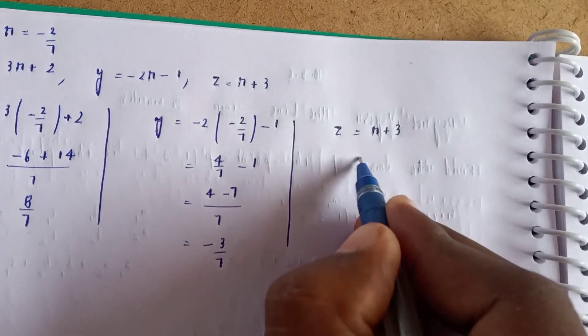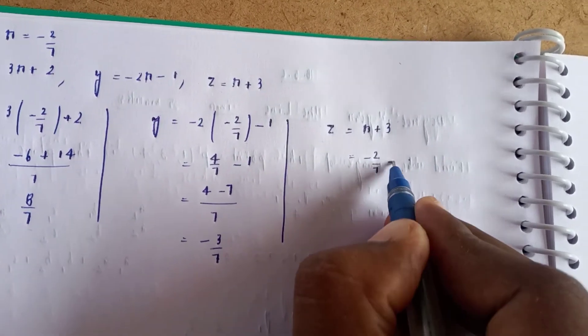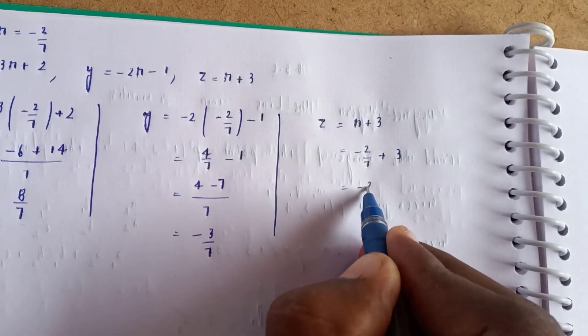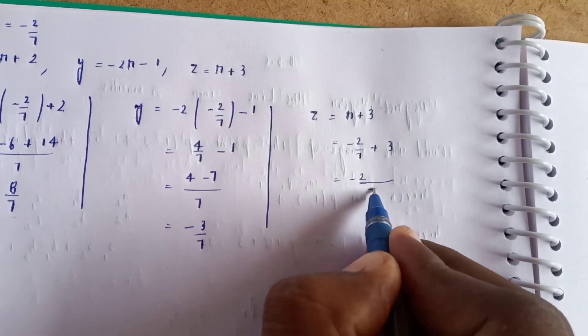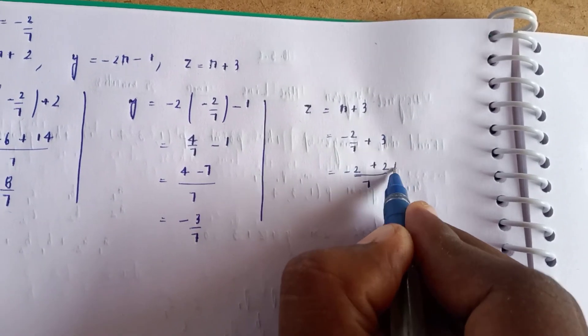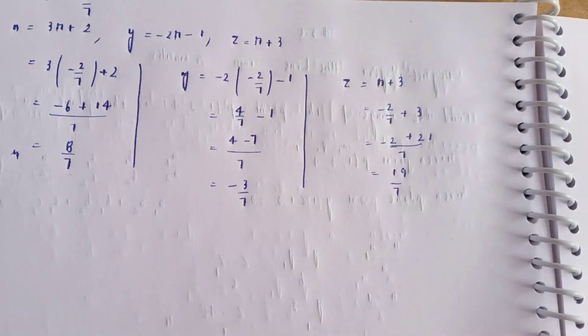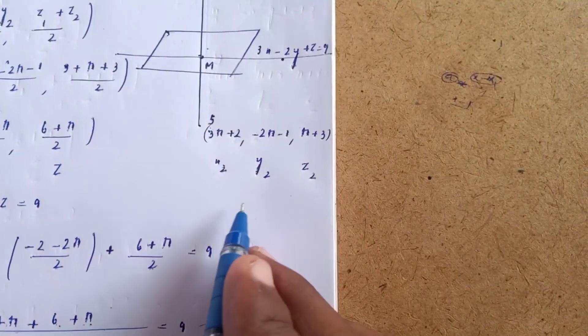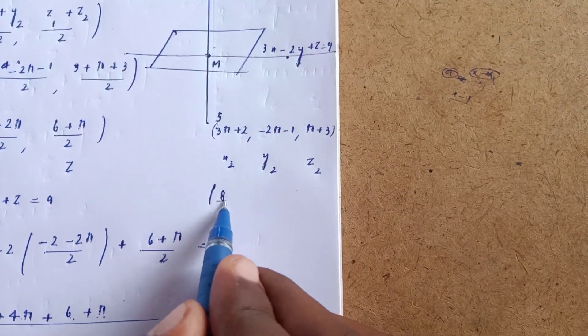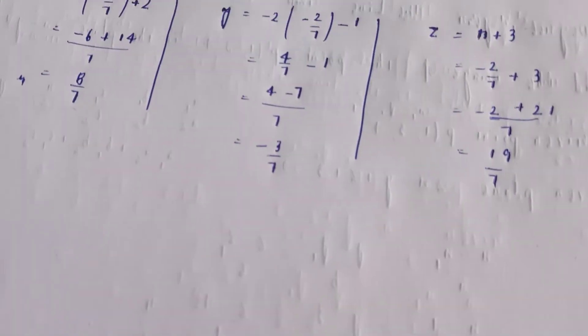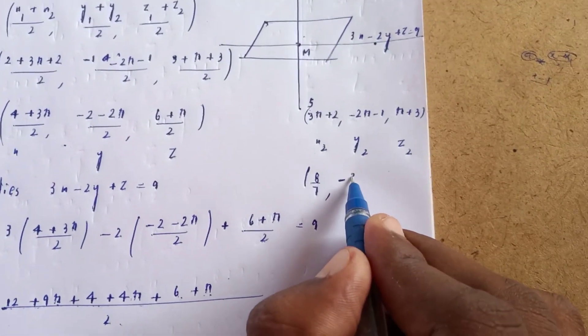For z: z = -2/7 + 3 = (-2 + 21)/7 = 19/7. Therefore, the image of the point is (8/7, -3/7, 19/7).